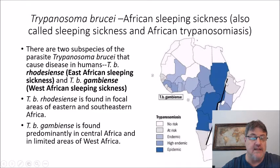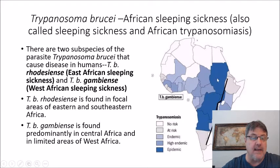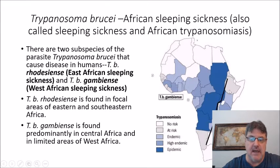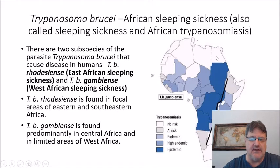Rhodesiense is found in eastern and southeastern Africa, while gambiense is found more in central Africa and a little bit in western Africa. There's some overlap between the two, so that's not a hard and fast rule, but for the most part, that's how it's divided geographically.